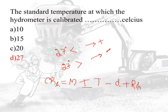The corrected hydrometer reading is equal to: meniscus correction plus or minus temperature correction, minus dispersing agent correction, plus original hydrometer reading. The question may ask: is meniscus correction positive or negative? Meniscus correction is always positive, and the dispersing agent correction is always negative.